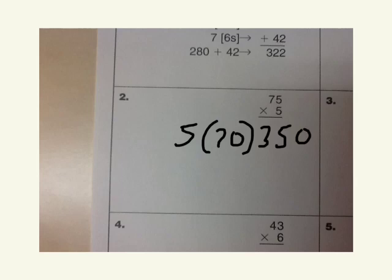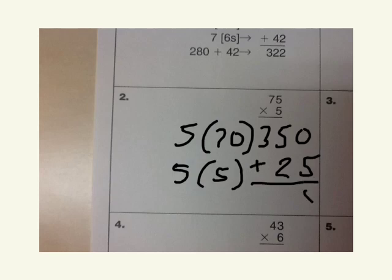And now in the ones place we have five fives, which will give us 25. Make sure your tens place and ones place lines up. Then you simply add them together for your answer of 375.